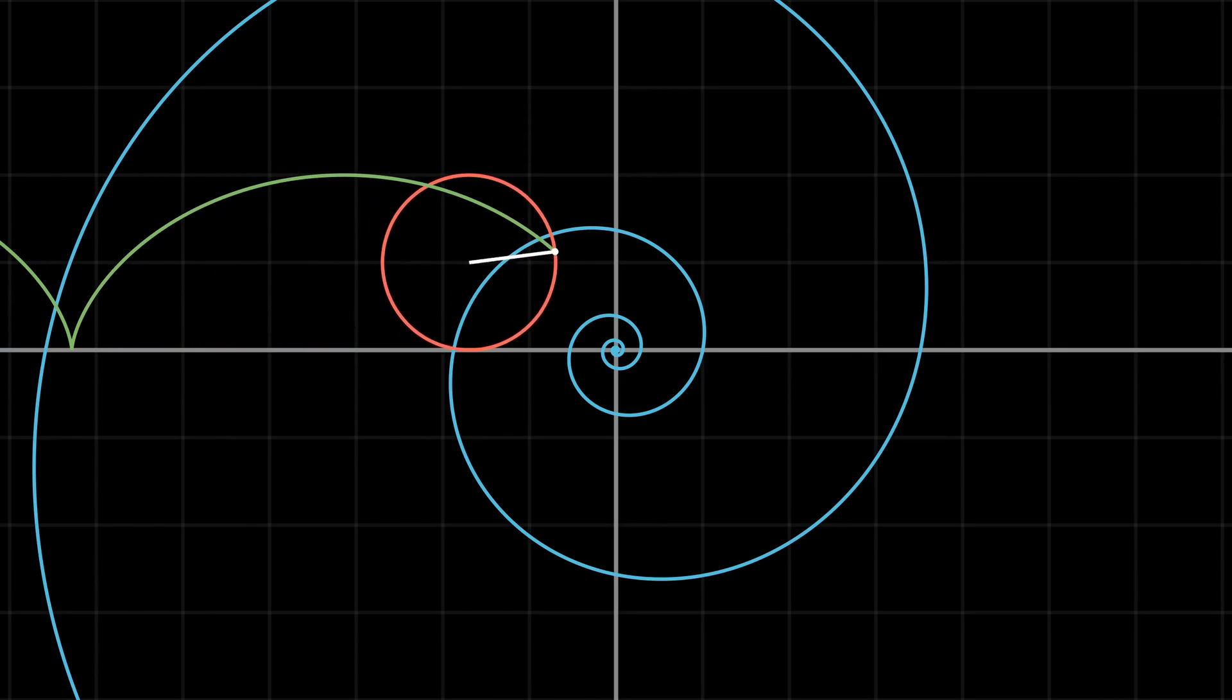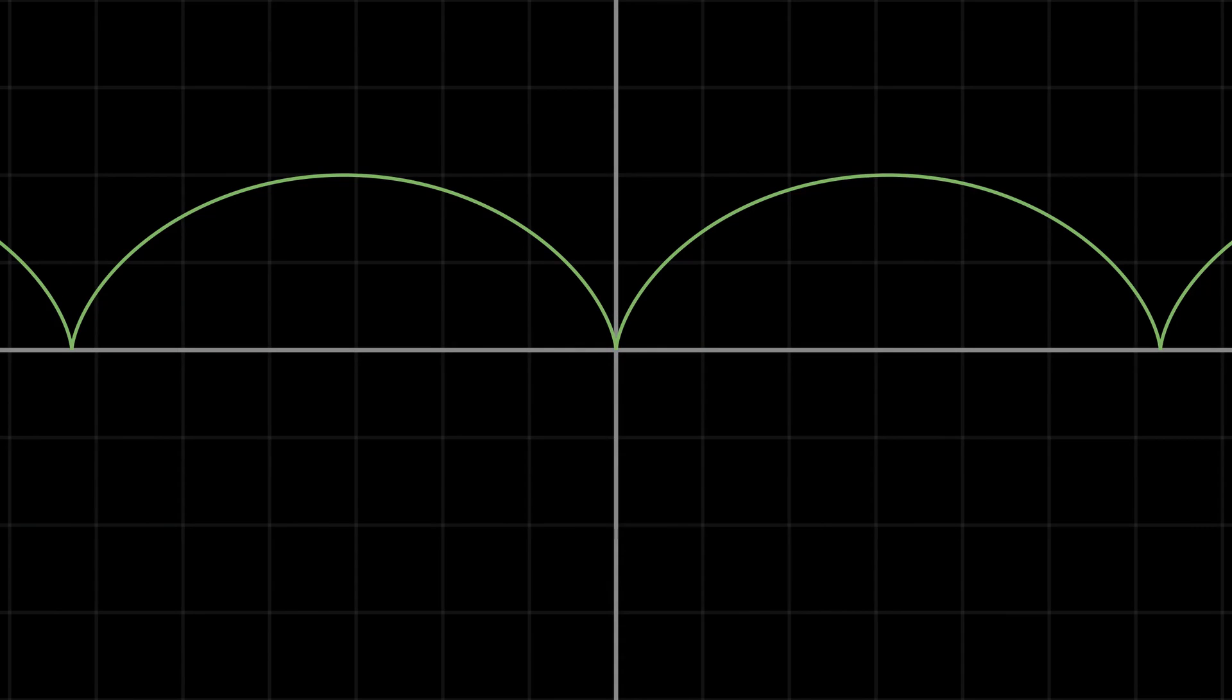The cycloid is a curve traced by a point on the circumference of a circle rolling on a straight line. This curve has fascinated many mathematicians throughout history. We also did an earlier video in our channel finding the area under the cycloidal arch.